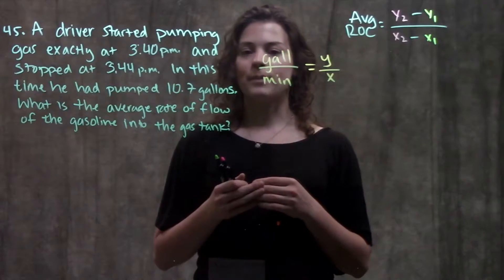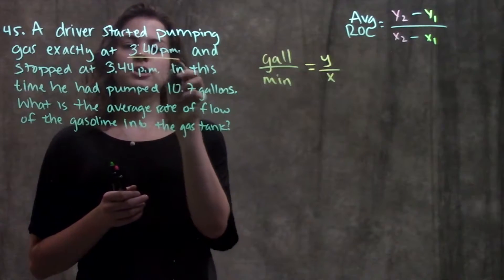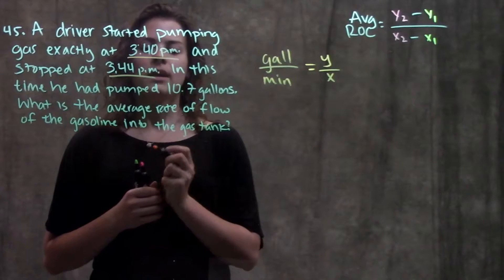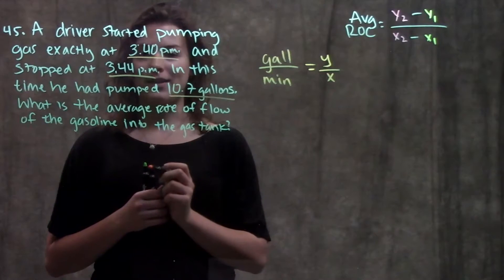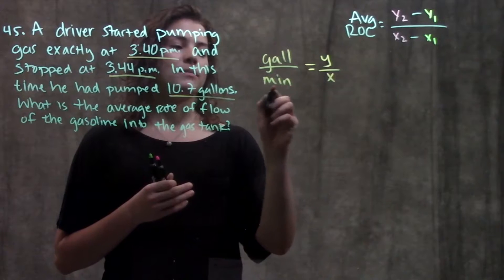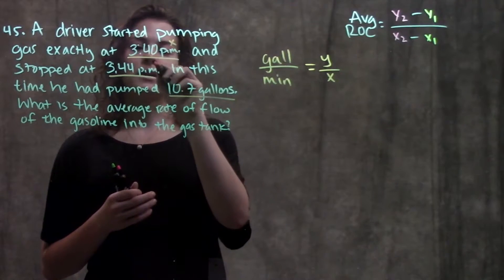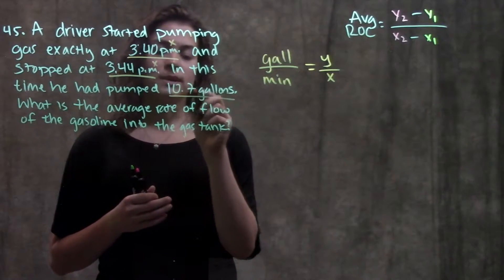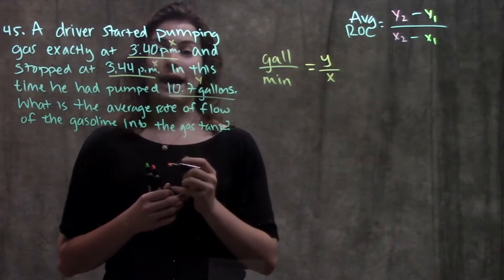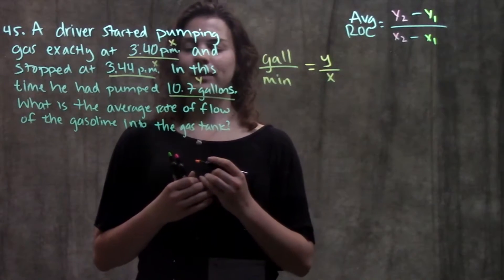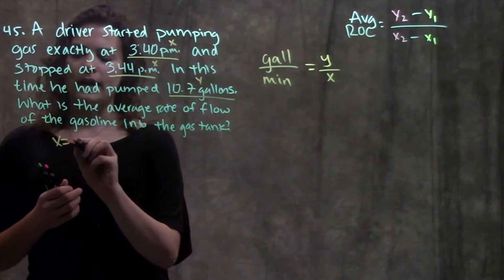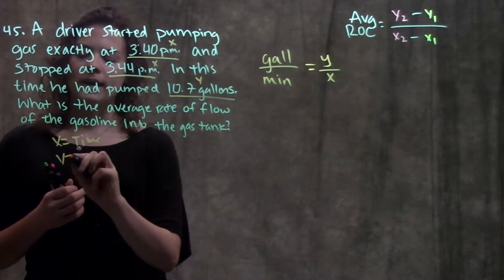So we go back to our word problem, and we see that we have two measurements of time here. And we also have a measurement of gallons. So like we just said, our measurement of time, those are going to be our x's. And our measurement of gallons, that's going to be our y, or our output value. So x is equal to time, y is equal to gallons.